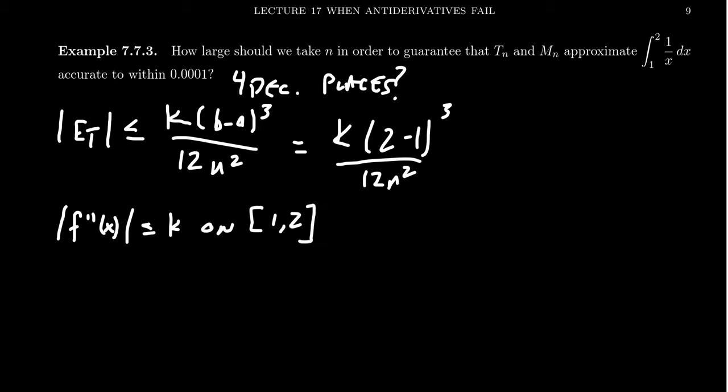For which case, the second derivative of our function is going to be 2 over x cubed. And as this is a decreasing function, its graph will look something like this from 1 to 2. The biggest value is going to occur on the left endpoint because it's decreasing. So you get 1, 2. We can take k to be this number 2.